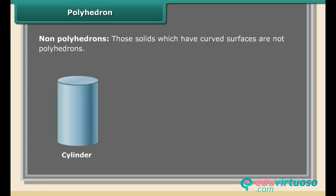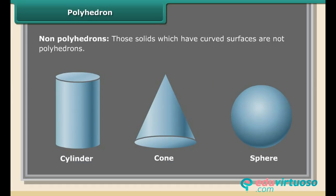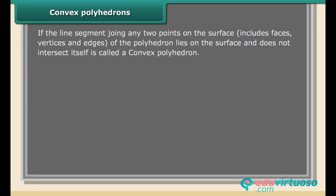Convex polyhedrons: If the line segment joining any two points on the surface, including faces, vertices, and edges of the polyhedron, lies on the surface and does not intersect itself, it is called a convex polyhedron.